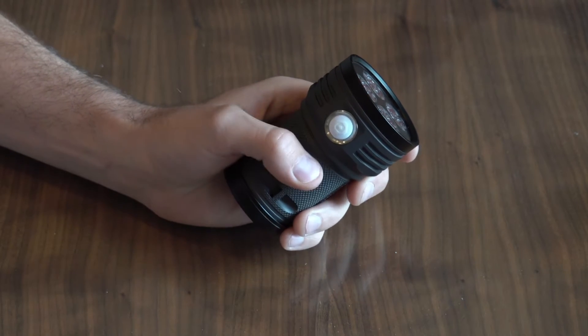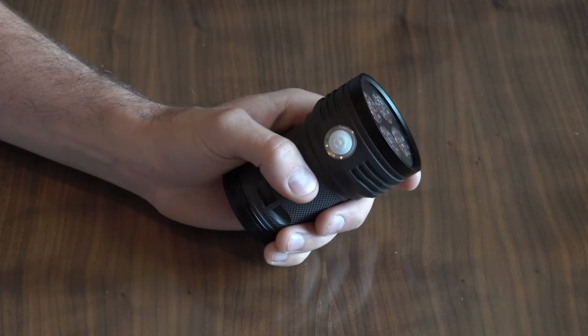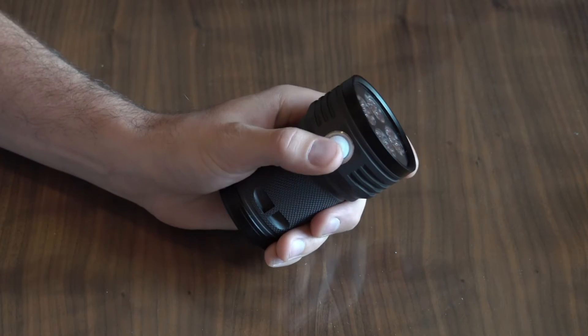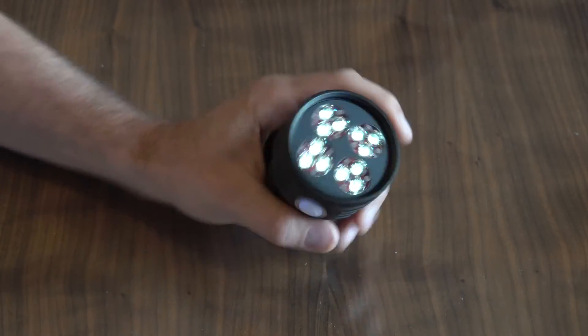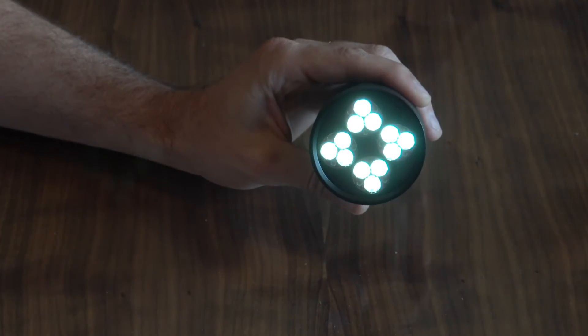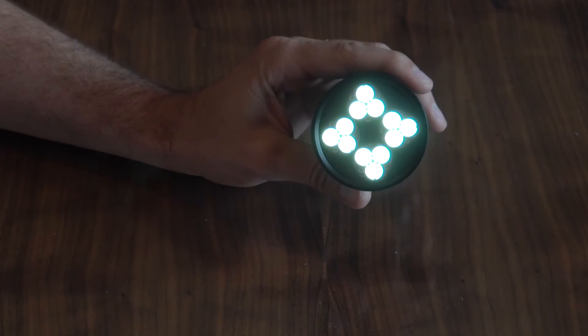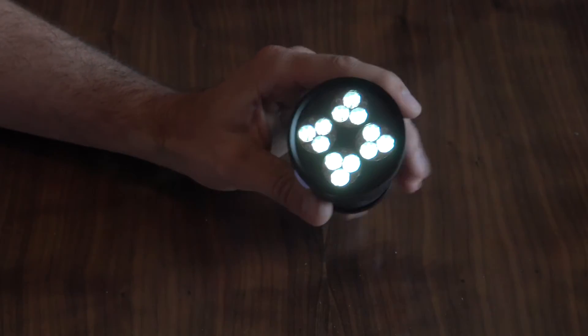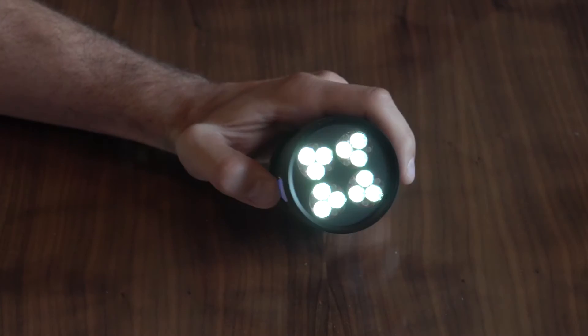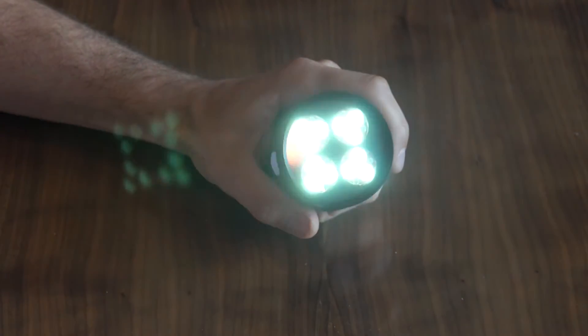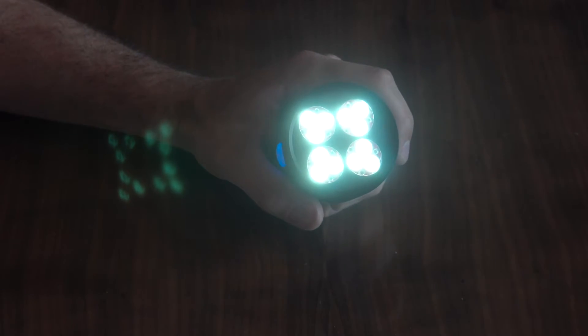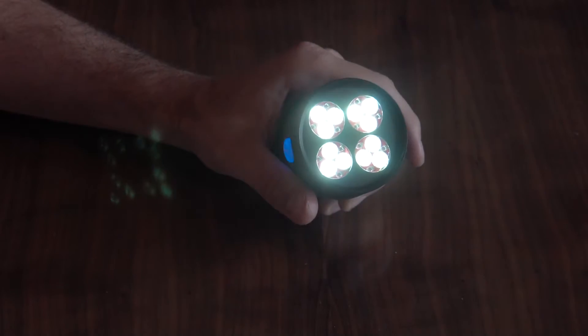The first is going to be the lower of the two main mode groups. And so you turn that on by just clicking the button once. Now the light is on that lower mode group. Now within each of the two mode groups, while you're turned on in there, a double click will increase the light level or decrease it between the two levels in that mode group.